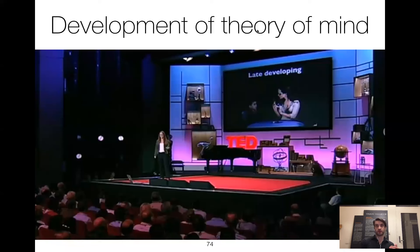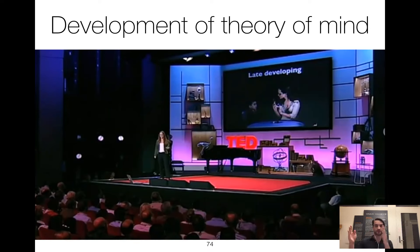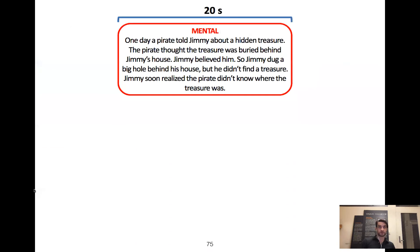This shows what's going on behaviorally, but you can also notice differences in the underlying brain regions in children as you see these differences in theory of mind capabilities. In one study, they put children and adults in the scanner and had them read different types of stories. Here is a mental story: 'One day, a pirate told Jimmy about a hidden treasure. The pirate thought the treasure was buried behind Jimmy's house. Jimmy believed him. So Jimmy dug a big hole behind his house and didn't find a treasure. Jimmy soon realized that the pirate didn't know where the treasure was.'